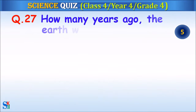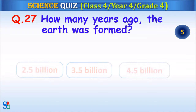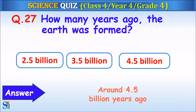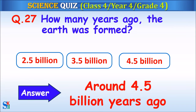Question 27: How many years ago was the earth formed — 2.5 billion years, 3.5 billion years or 4.5 billion years? Your time starts. The answer is 4.5 billion years ago.